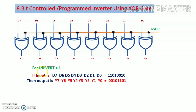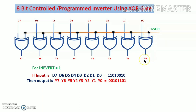Now see how it works. Suppose in the first case, if the invert input is 1 and the data input is 1101 0010: here D7 is 1 and invert is 1, so there are two 1 inputs at the input of the XOR gate, hence we get Y7 output 0. Similarly, D0 is 0 and invert is 1, meaning there are an odd number of ones at the input, so we get Y0 output 1. In this way the input data is complemented — we get the one's complement of the input number at the output.